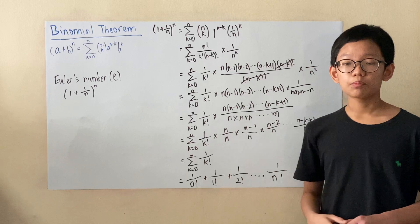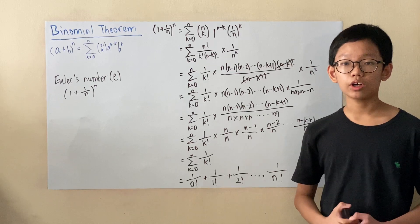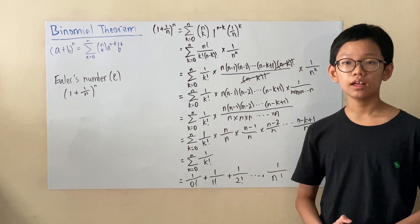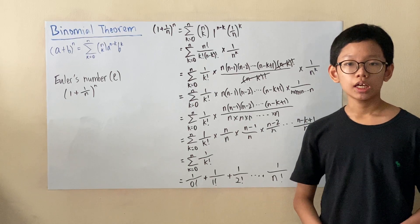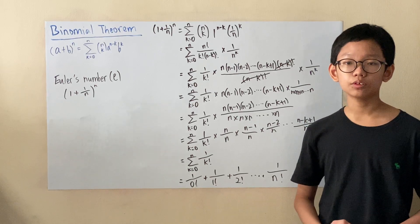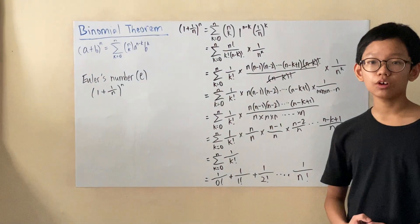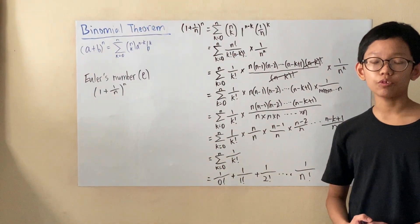So with the binomial theorem, we're able to calculate Euler's number. And as n gets bigger, Euler's number becomes more accurate. An example would be if n equals 5, the approximate value of Euler's number would be 2.488.